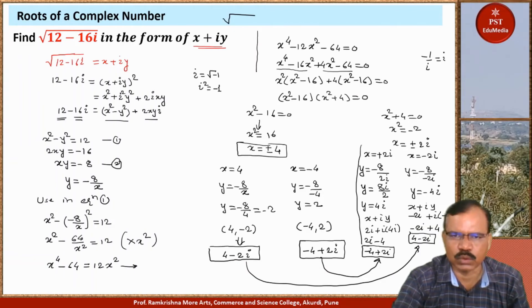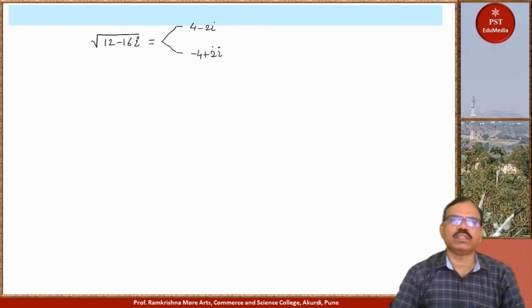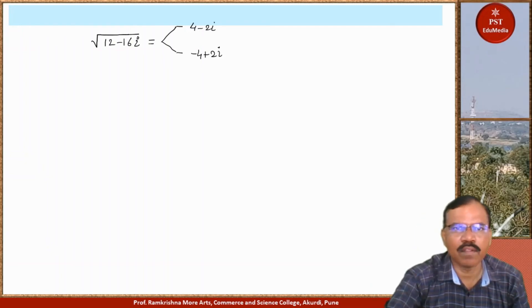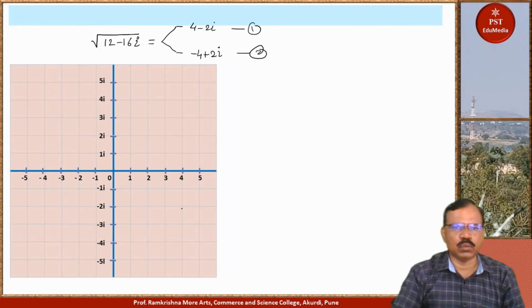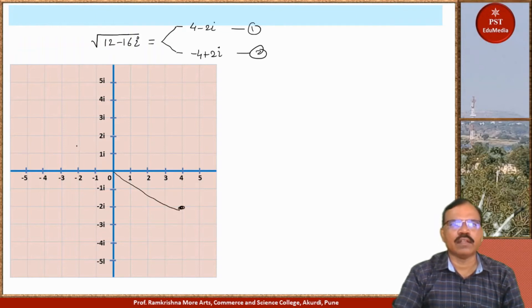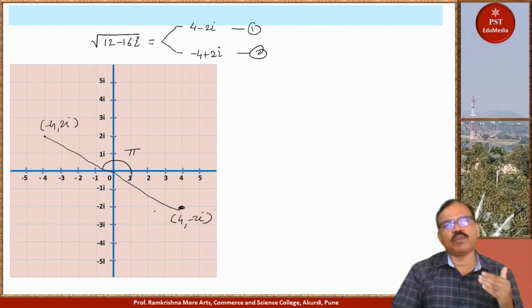So the square root of 12 minus 16i equals 4 minus 2i and minus 4 plus 2i — these are the two roots. We can plot these roots: 4 minus 2i is in the fourth quadrant and minus 4 plus 2i is in the second quadrant. The angle between them is pi — they are opposite to each other. So the square root of a complex number gives two roots, which are themselves complex numbers.